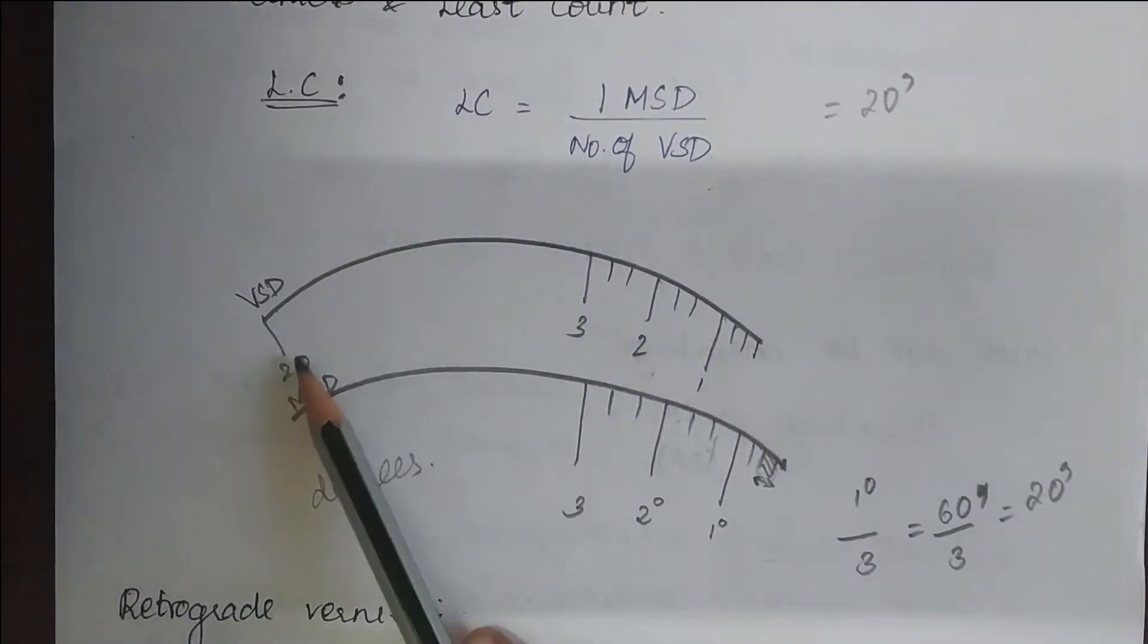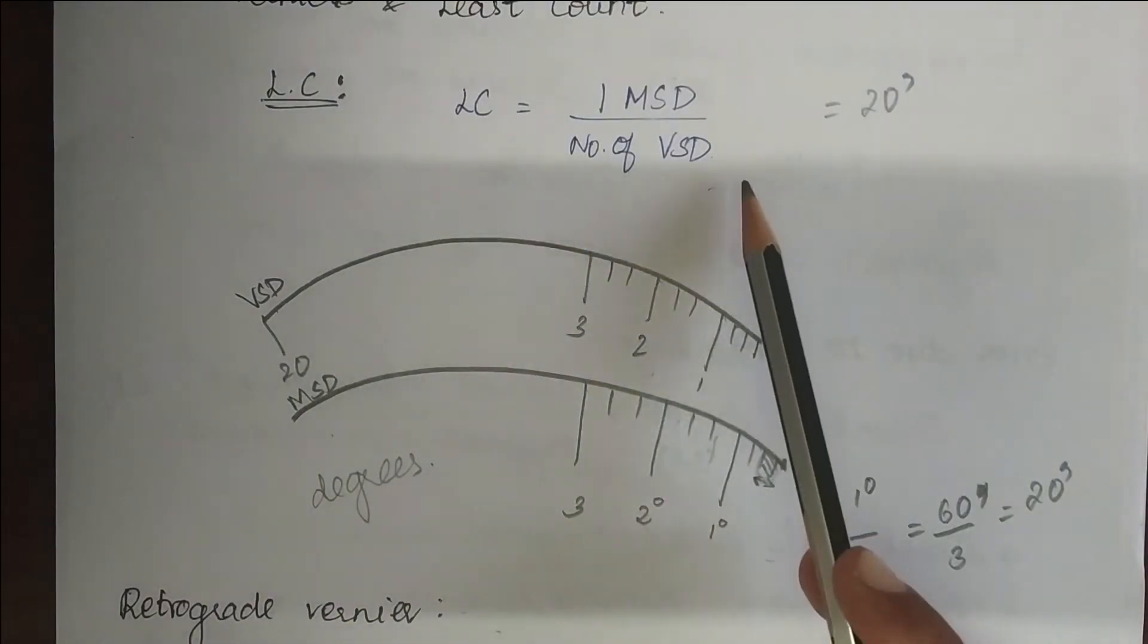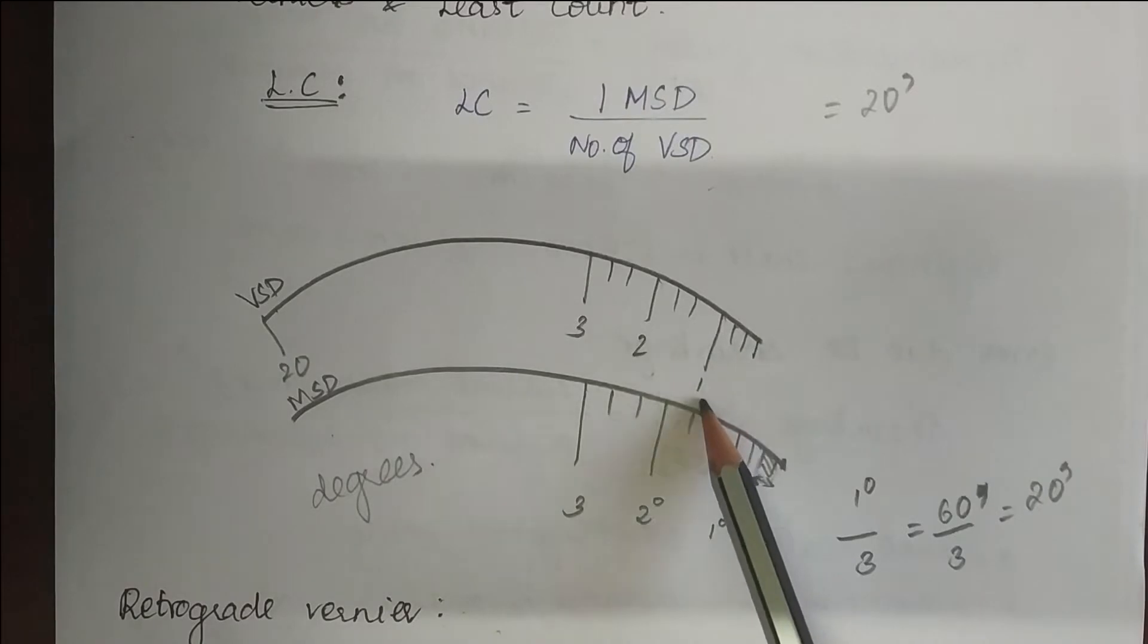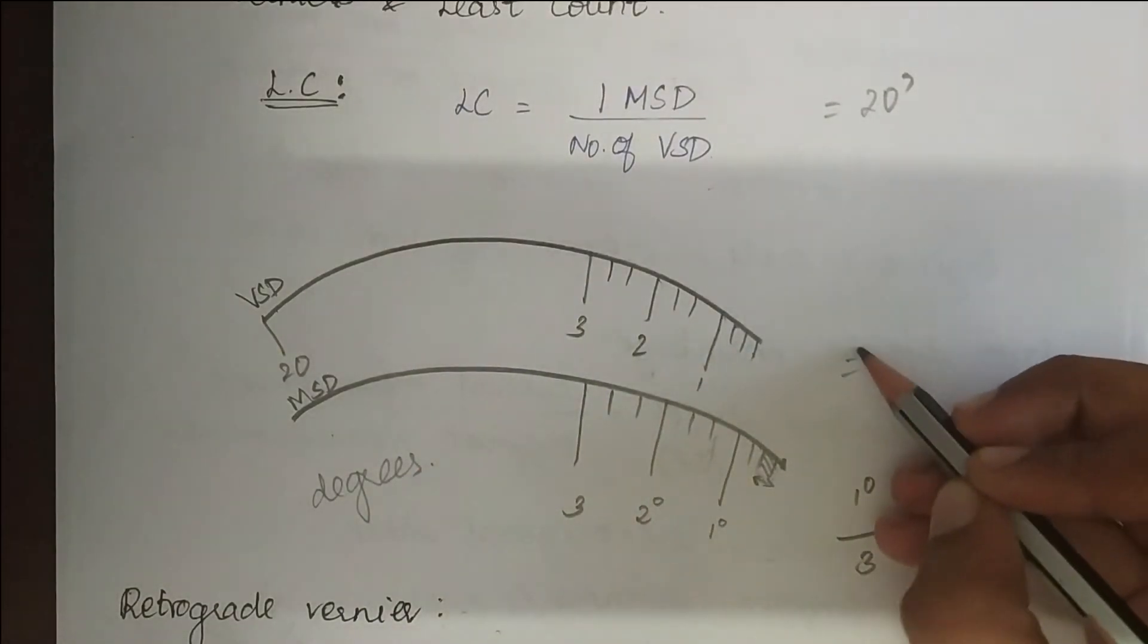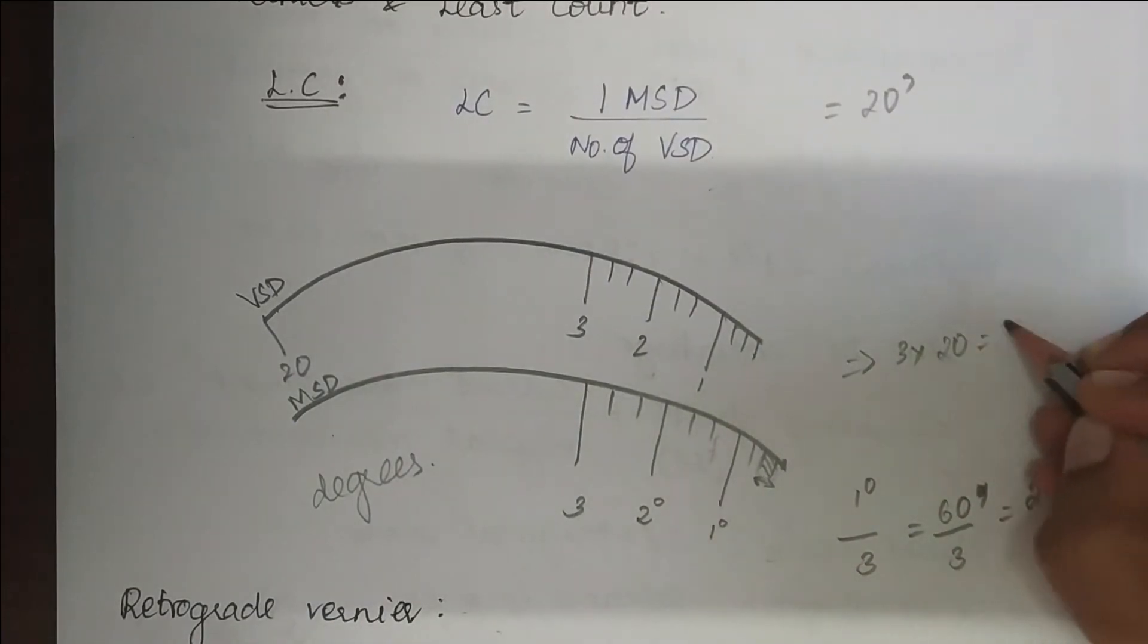Next, number of vernier scale divisions. So number of vernier scale division is 3 into 20 which is 60.